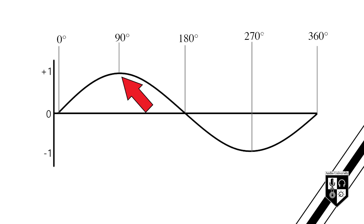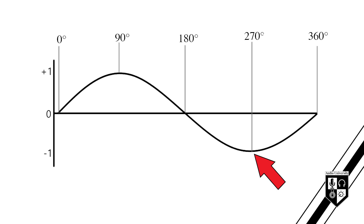The 90-degree point is at the height of the compression phase. The line heads downward, crossing the x-axis again at the 180-degree point. The 270-degree point is at the lowest point on the graph, where the rarefaction is most extreme. And finally, the 360-degree point is where the line returns to its original position. One 360-degree revolution is called a cycle.